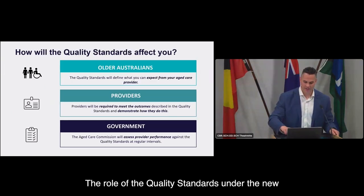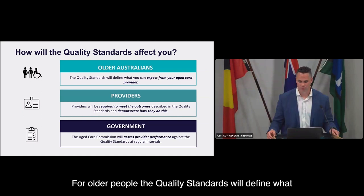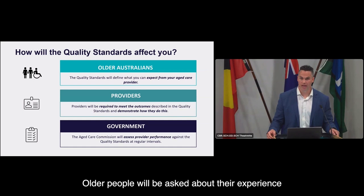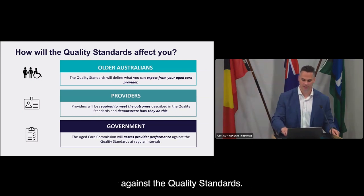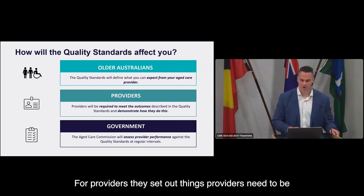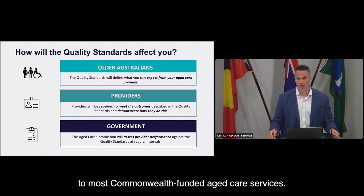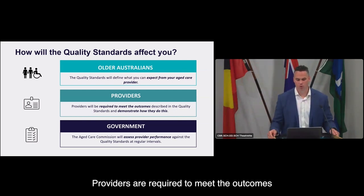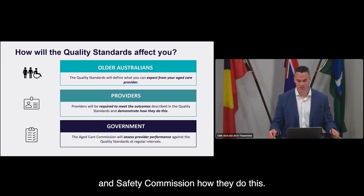The role of the quality standards under the new aged care system will be similar to the current standards. For older people, they will define what older people can expect from their aged care provider, and older people will be asked about their experience with their provider. For providers, they set out things providers need to be able to do to deliver quality care, applying to most Commonwealth-funded aged care services. Providers are required to meet the outcomes and demonstrate through evidence to the Aged Care Quality and Safety Commission how they do this. The actions provide better clarity on how. The revised standards will be supported by detailed guidance and other resources to be developed in 2023.